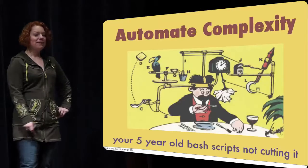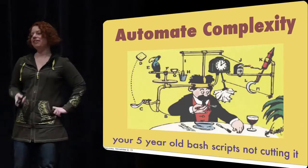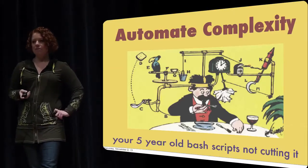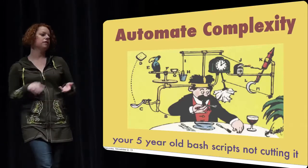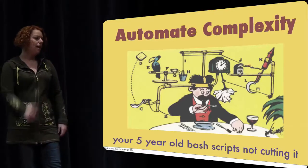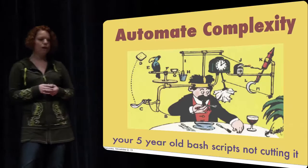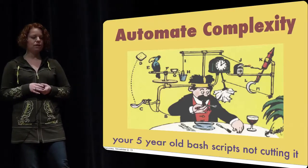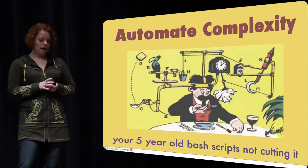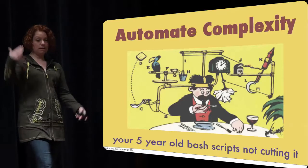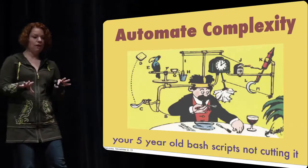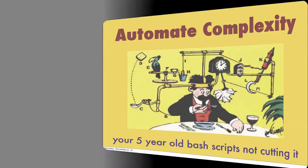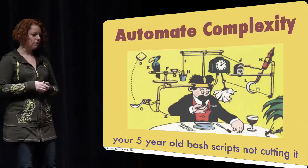We can automate our complexity. We can use configuration management to automate our deployments to a certain extent. We're never going to get rid of complexity entirely — deployments are complex creatures with a lot of moving parts: app servers, web servers, load balancers, cache servers, database schemas, all with versions, often requiring orchestration. But instead of running around servers with a big long checklist — turning off app servers, making sure nobody's taking traffic, making sure the database is the right schema number, running deployment scripts that may or may not work depending on the moon phase — you can do quite a bit to make your app and infrastructure self-aware.